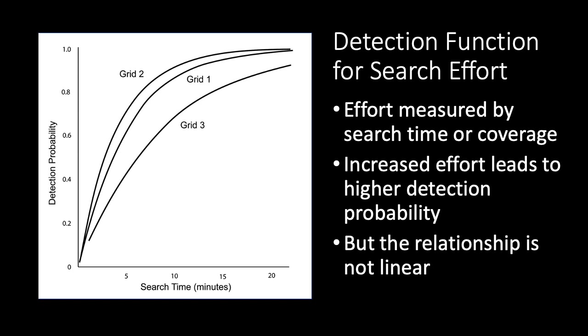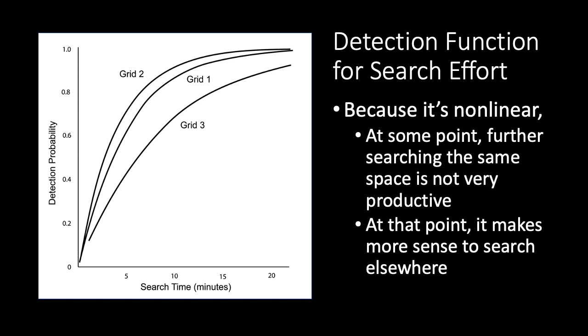The non-linearity results from a number of reasons, including that the number of targets available is finite and that we're likely to make the easiest detections first. For example, we're likely to find the largest and most obtrusive artifacts in the first few minutes of search. Once we've searched long enough to reach that plateau, it really makes more sense to search elsewhere, where we'd be in the steeper part of the curve.